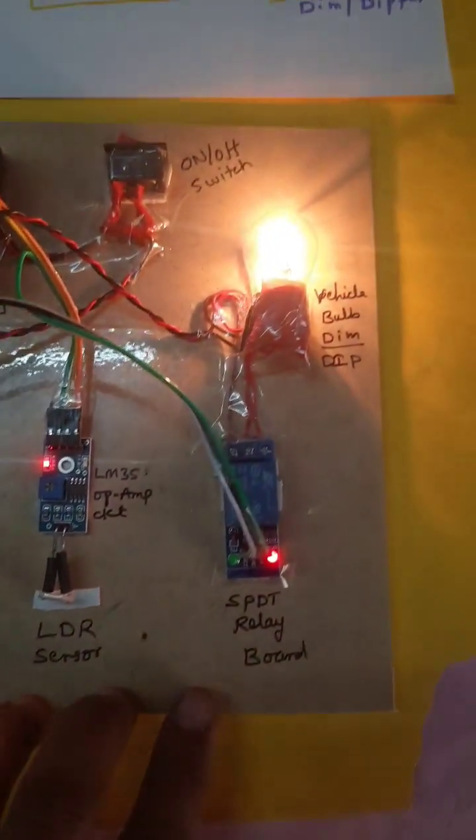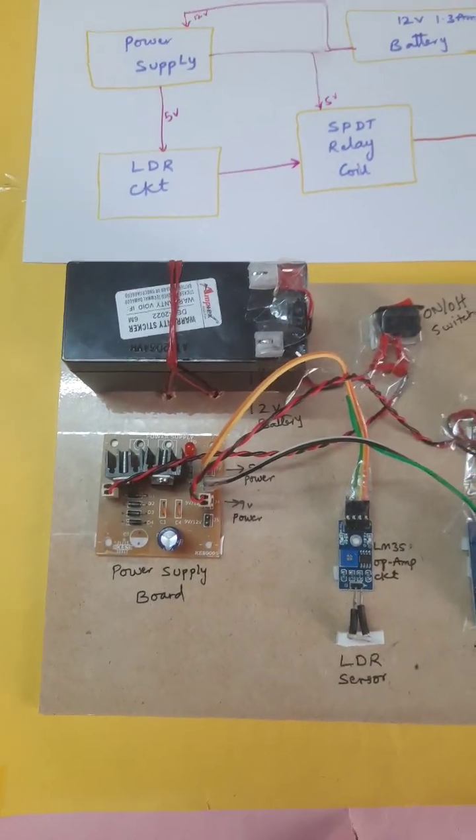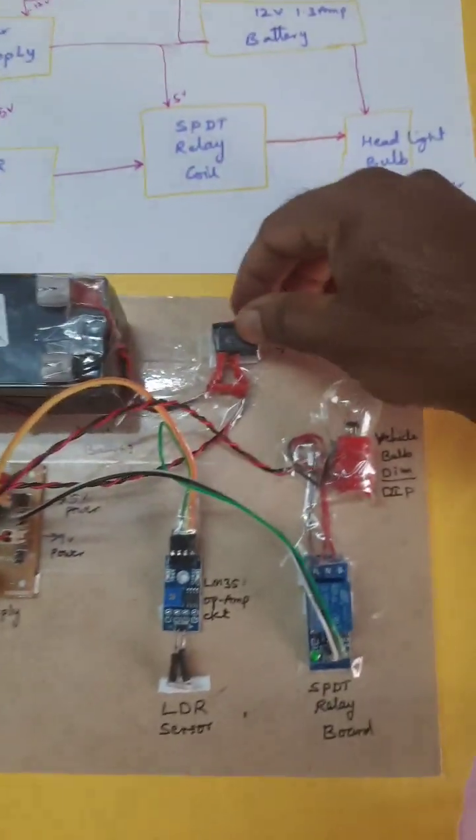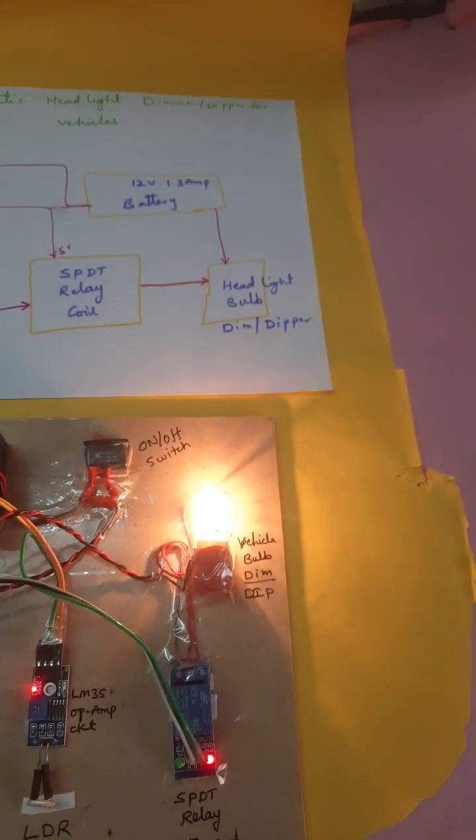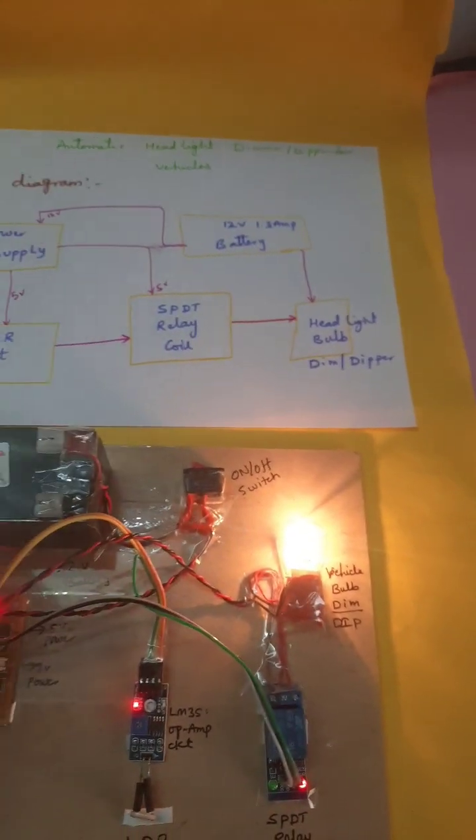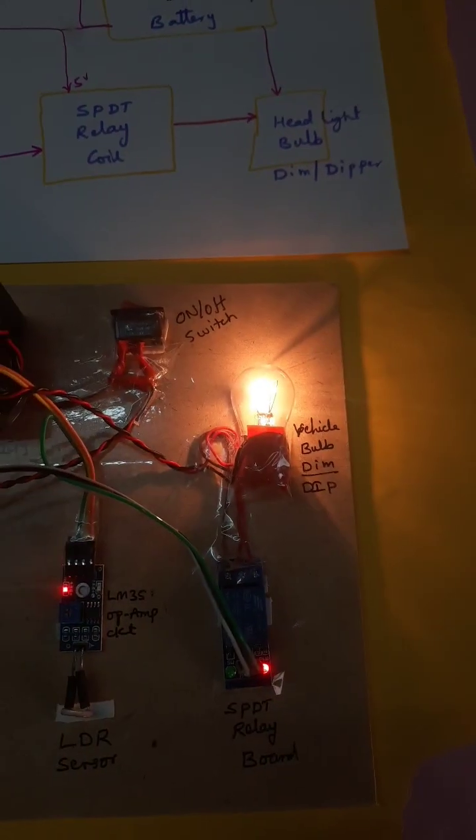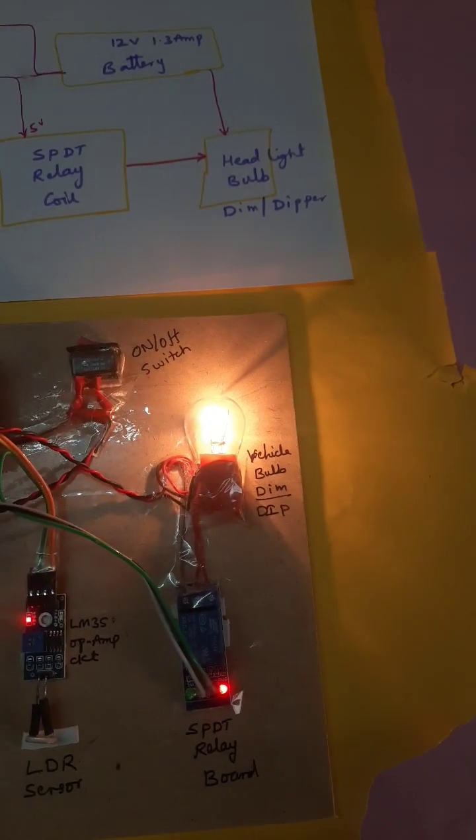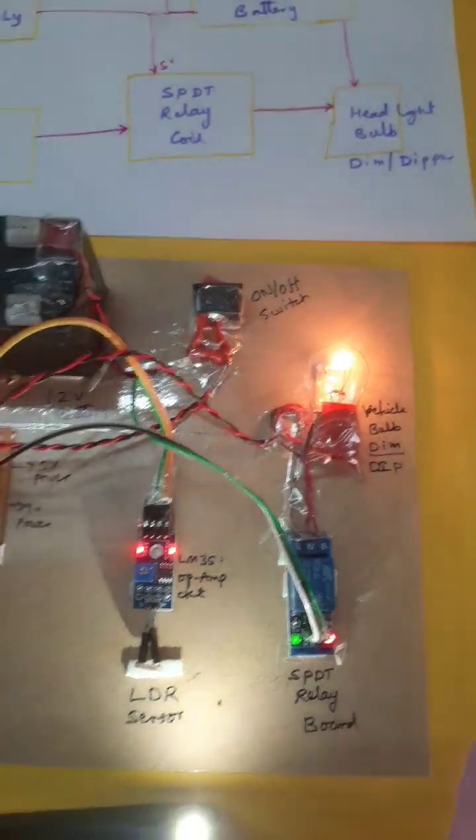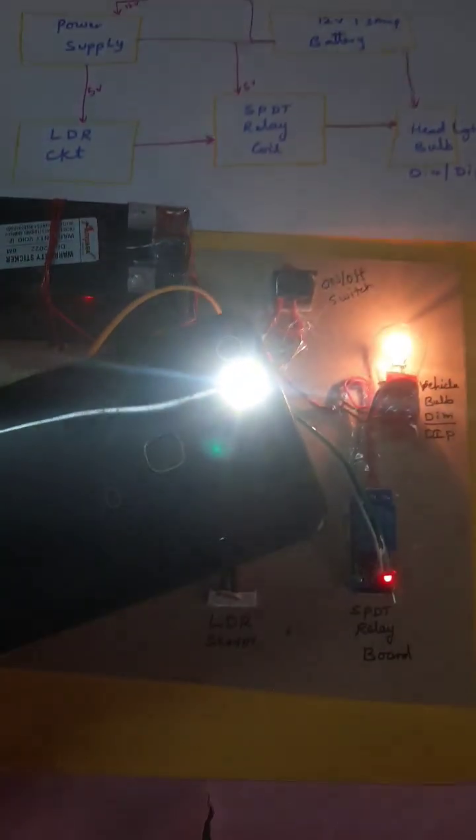Here we are using the SPDT relay and one bulb with an on/off switch button. When it is on, it is in dip mode. Whenever a vehicle comes from the opposite direction, it will go to dip. When there is no vehicle, it goes to dim.